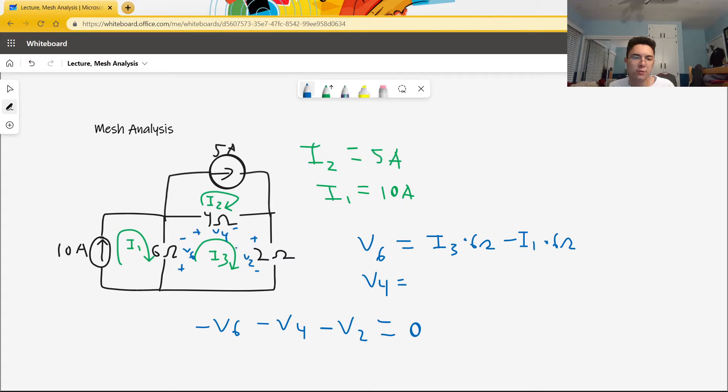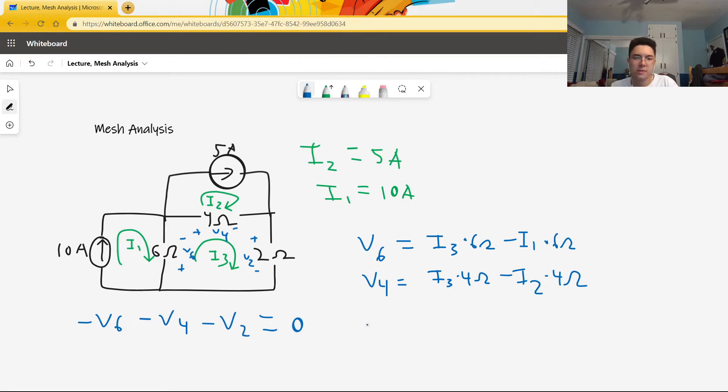Once again, V4 is equal to, I3 goes from positive to negative, so it causes a positive drop of I3 times 4 ohms. I2 goes from the negative to the positive, so it reduces the voltage drop due to I3 by I2 times, oh, I messed up my 2, times 4 ohms.